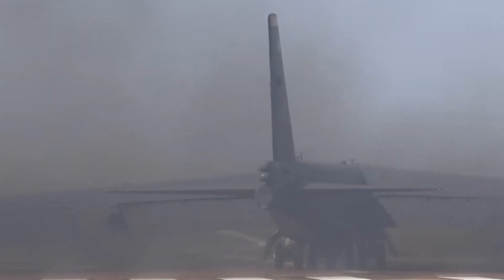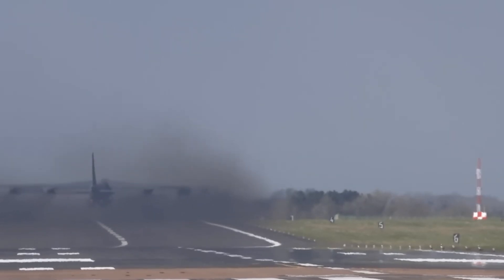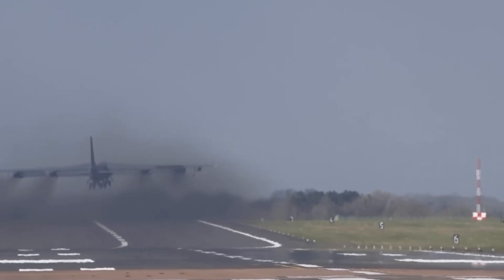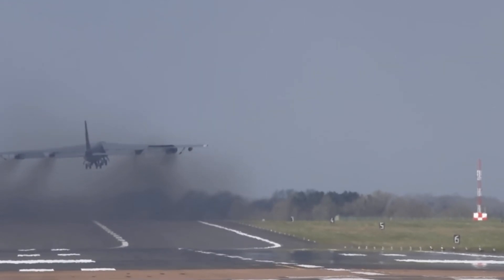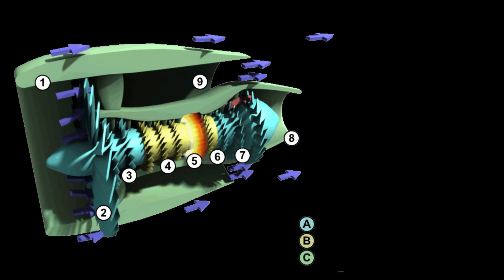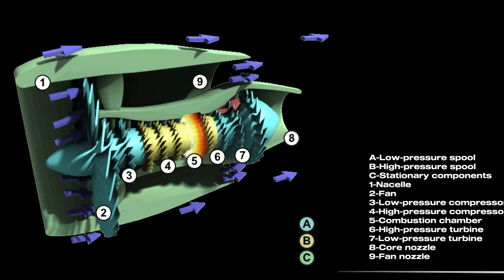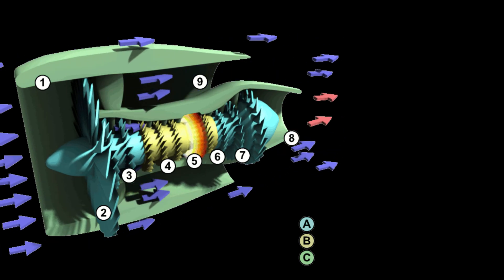Turbofans are broadly split into low bypass and high bypass categories. Bypass air flows through the fan but around the jet core, not mixing with fuel and burning.